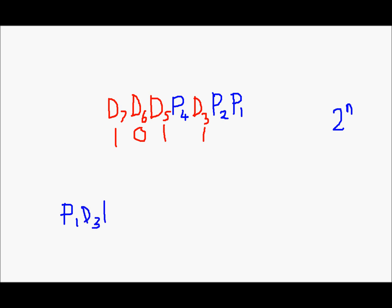For p1, d3, d5, and d7: d3 is 1, d5 is 1, and d7 is 1. For even parity, meaning an even number of 1s, p1 will have to be 1. So p1 is 1.